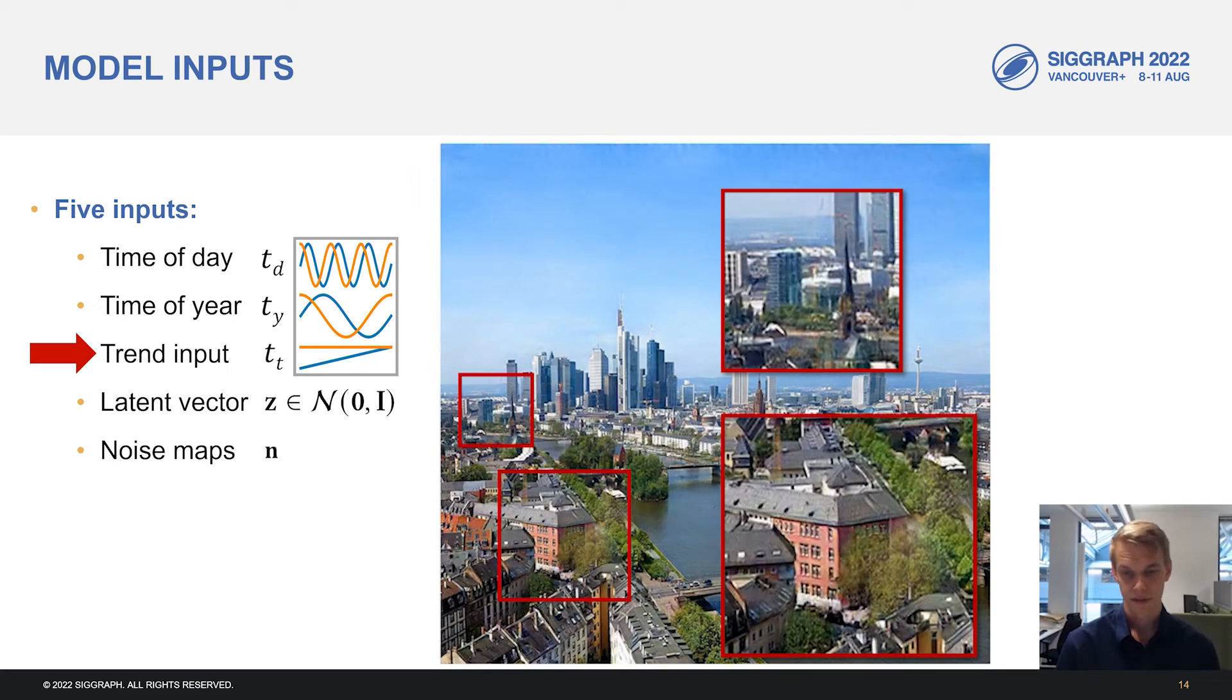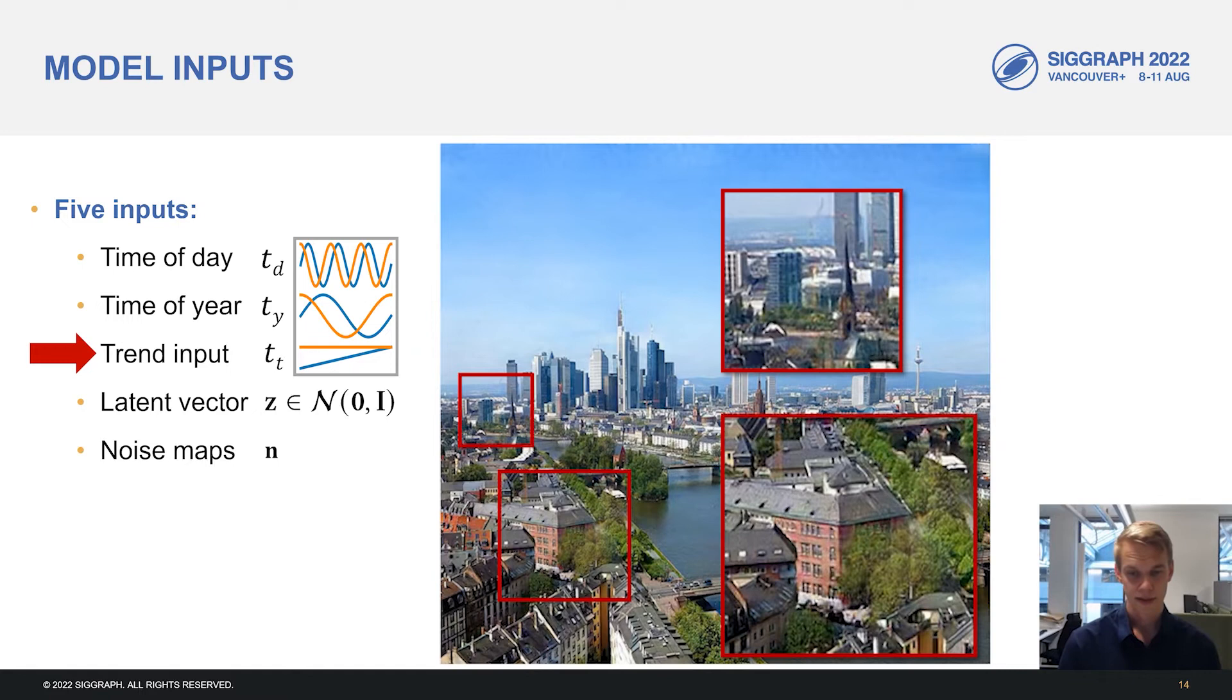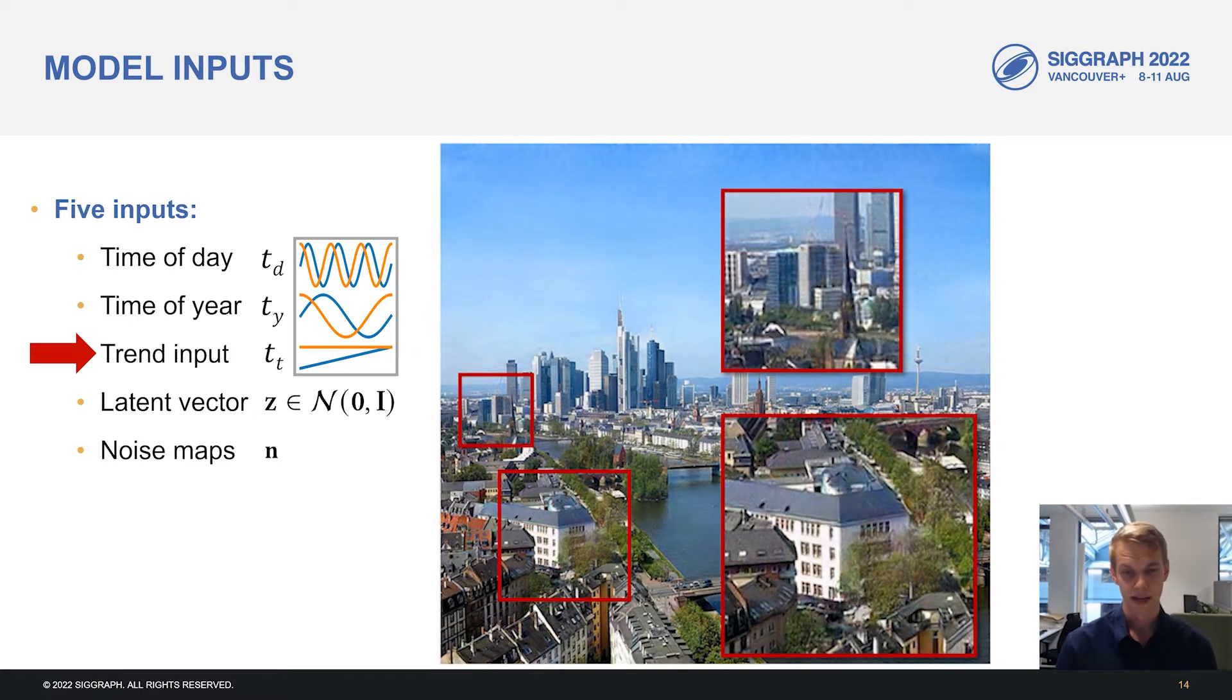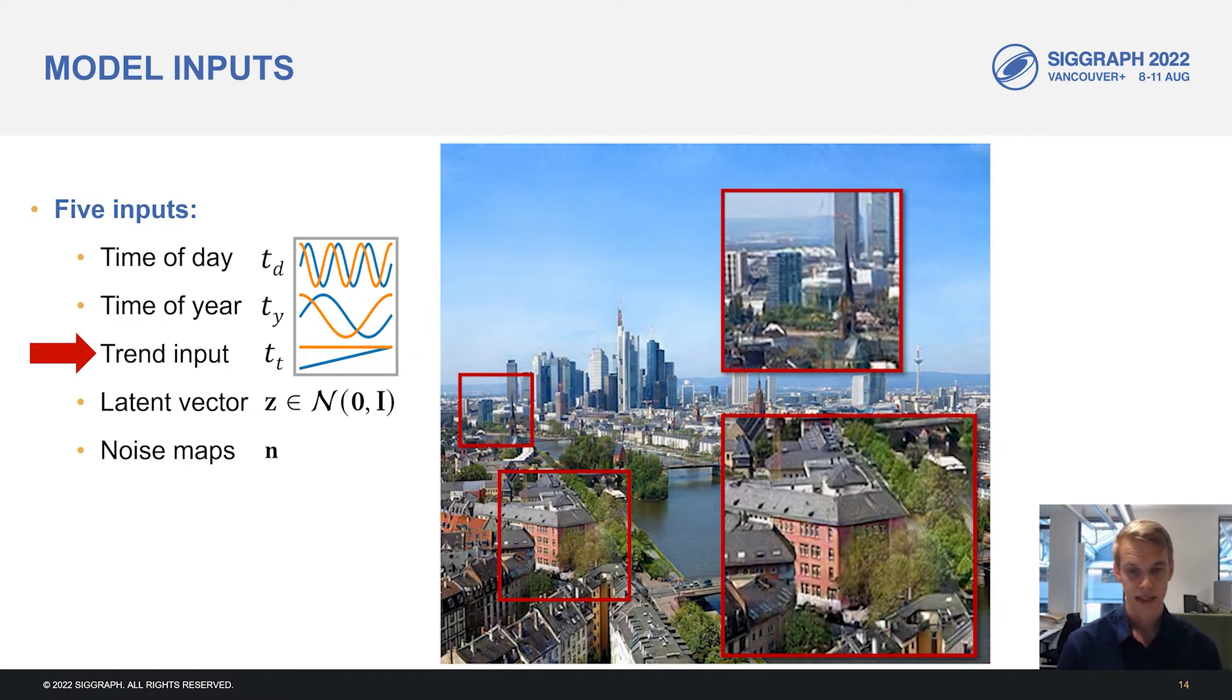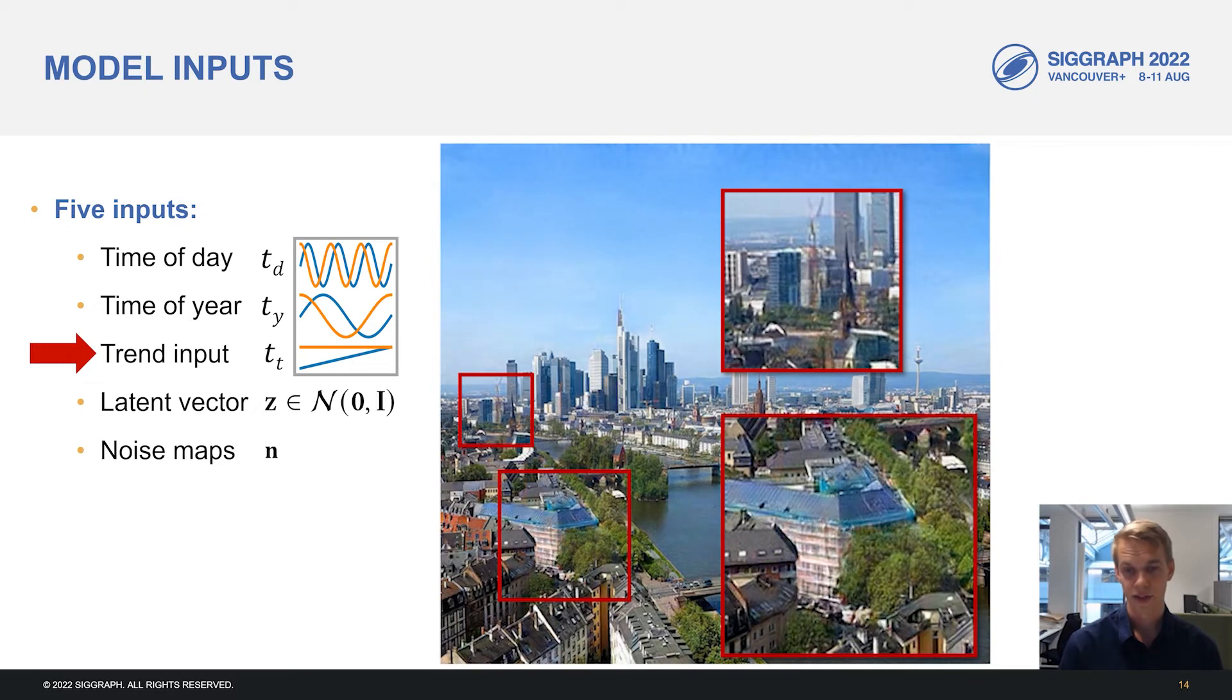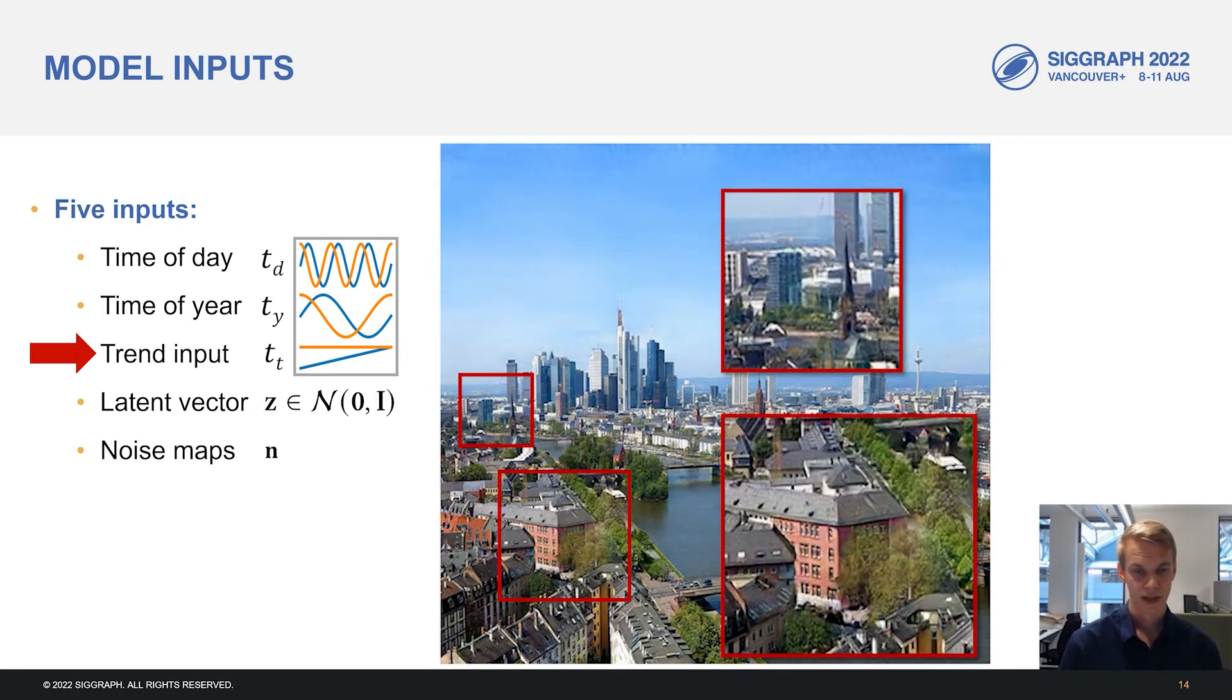The trend input controls non-repeating changes like we've seen before. In the bottom inset, we can see the house being painted white again. And in the top, we can see a new building being constructed while all other aspects of the image stay unchanged.